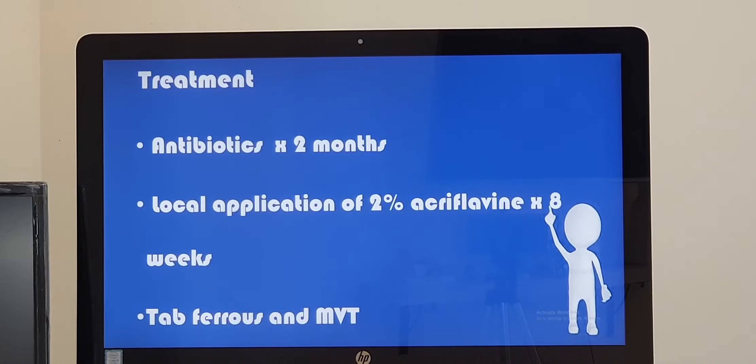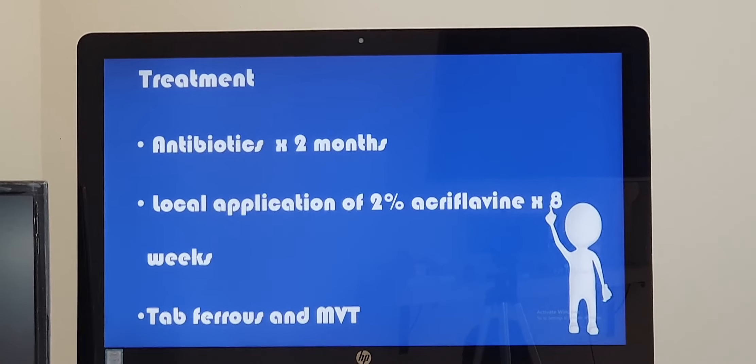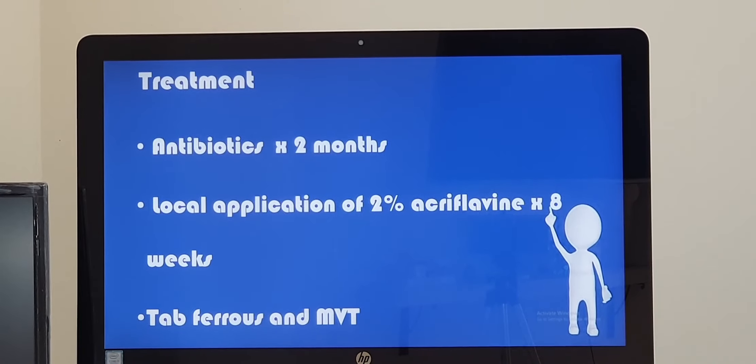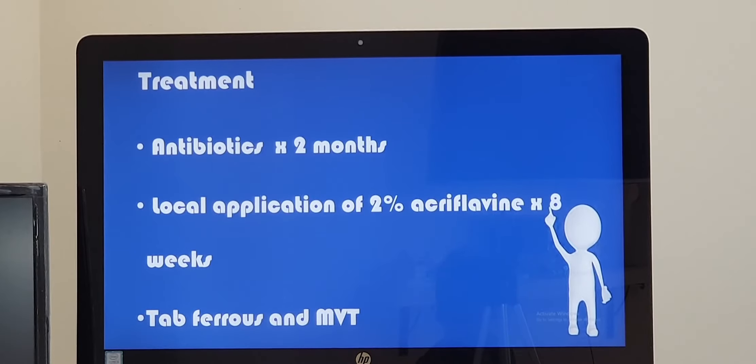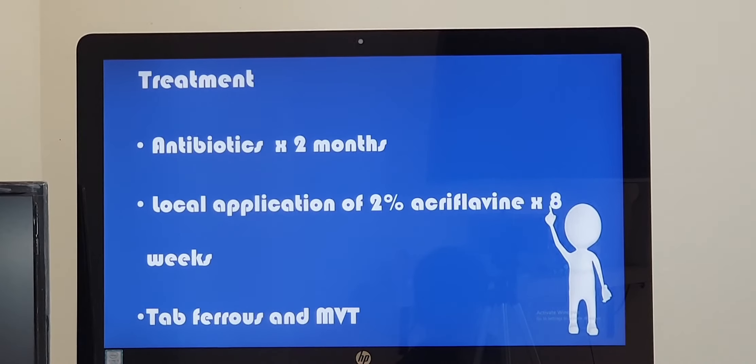Once the investigation is done, we will start with the treatment. Treatment is mainly medical treatment. We give a combination of antibiotic for two months course. We like to give 2% acriflavine for local application too. Since the general condition of the patient is bad, we have to improve the general condition. We will supplement iron and multivitamin. And of course, good balanced diet, regular diet is important. And a lot of fluid intake has to be advised.